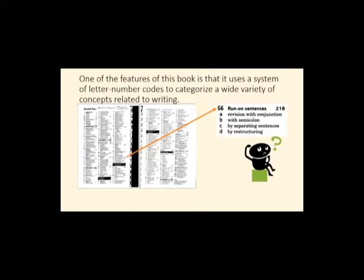One of the features of this book is that it uses a system of letter-number codes to categorize a wide variety of concepts related to writing. So I've shown you here the detailed menu that you'll find in the inside back cover of the Writer's Reference book. And if you look really closely, you can see a wide range of letter-number codes. I've pulled out here the G6 section, which deals with run-on sentences, and we'll be pulling an example from that G6 section in this presentation today.